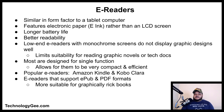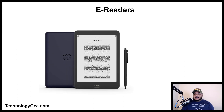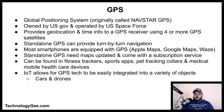An e-reader is a device designed as a convenient way to read e-books. It is similar in form factor to a tablet computer, but features electronic paper, also known as e-ink, rather than an LCD screen. This yields much longer battery life — the battery can last for several weeks — and better readability similar to paper, even in sunlight. Low-end e-readers with monochrome screens do not display graphic designs well, which limits their suitability for graphic novels or technical documents. Most e-readers are designed for a single function, making them compact and efficient. Popular e-readers are the Amazon Kindle and the Kobo Clara. E-readers that support ePub and PDF formats are more suitable for graphically rich books.